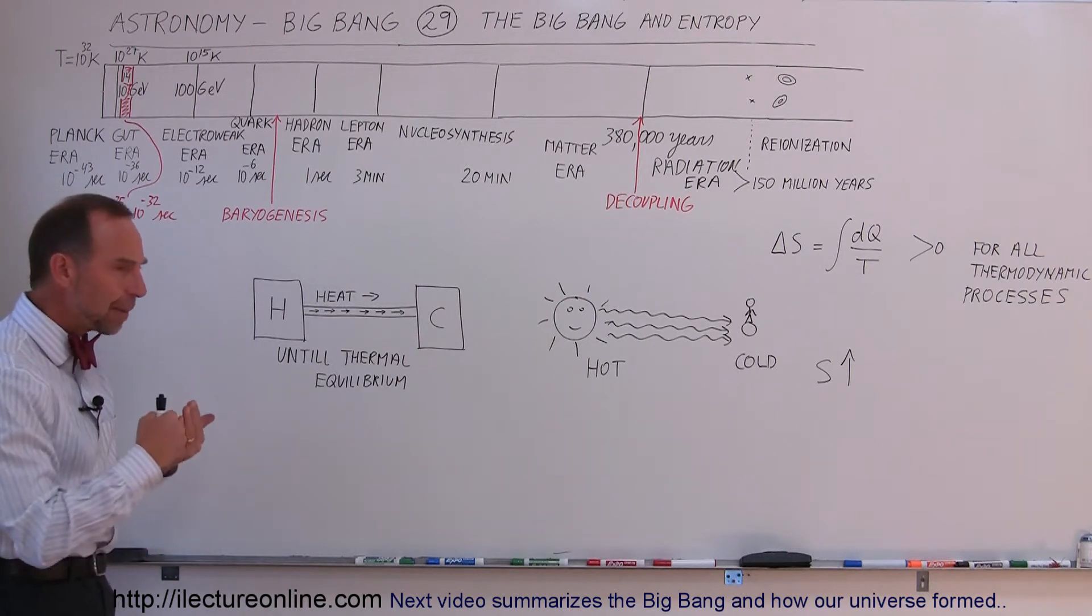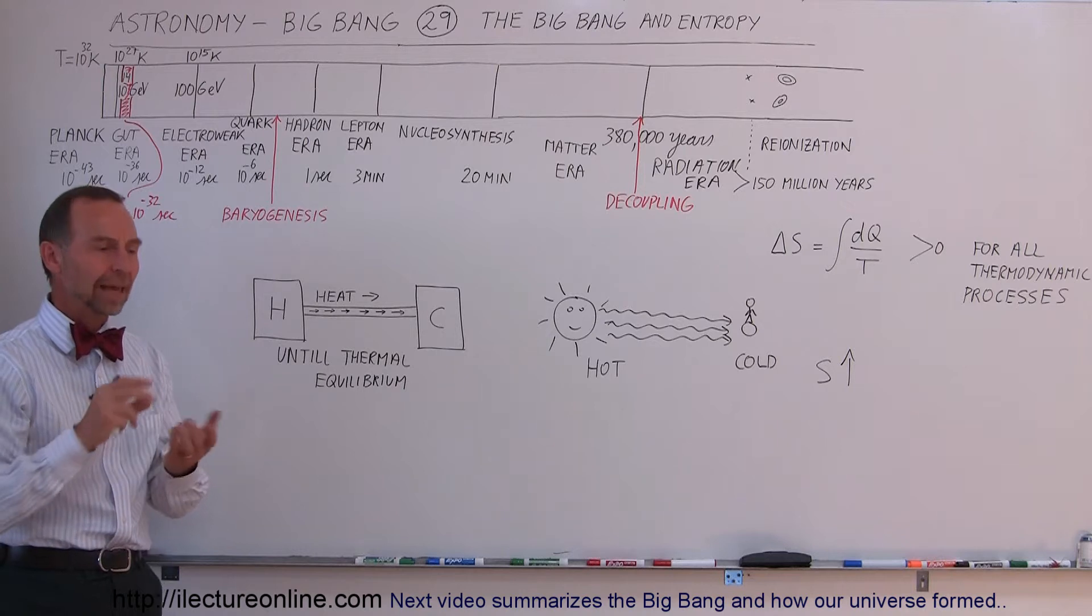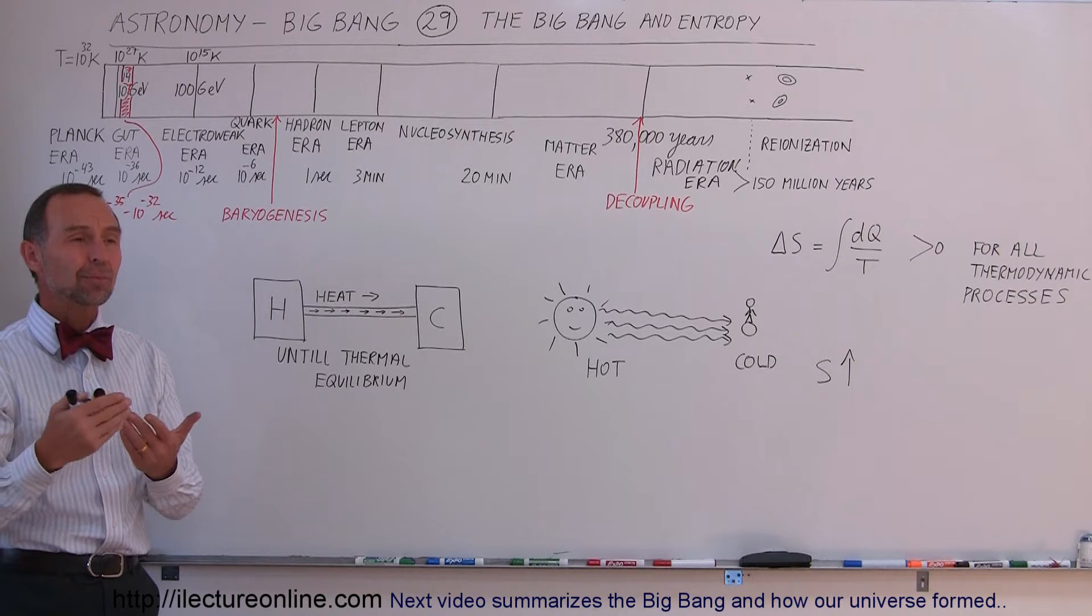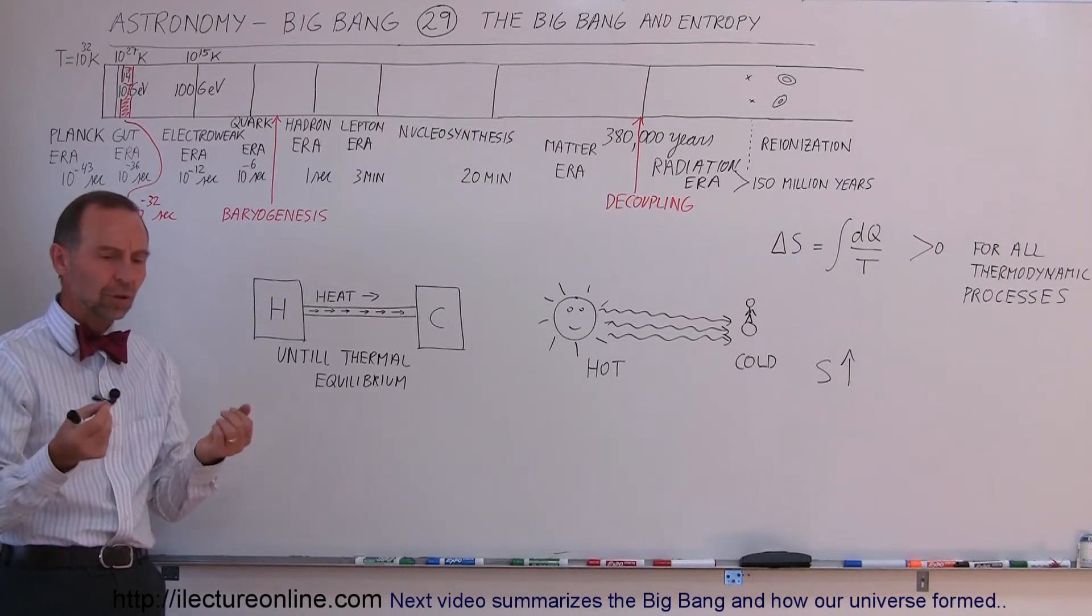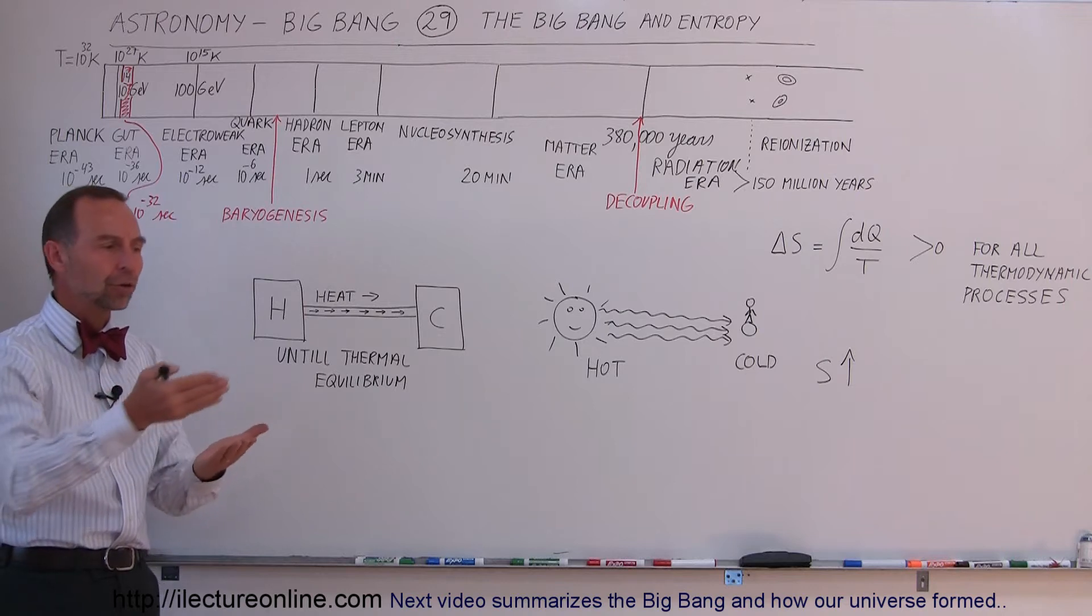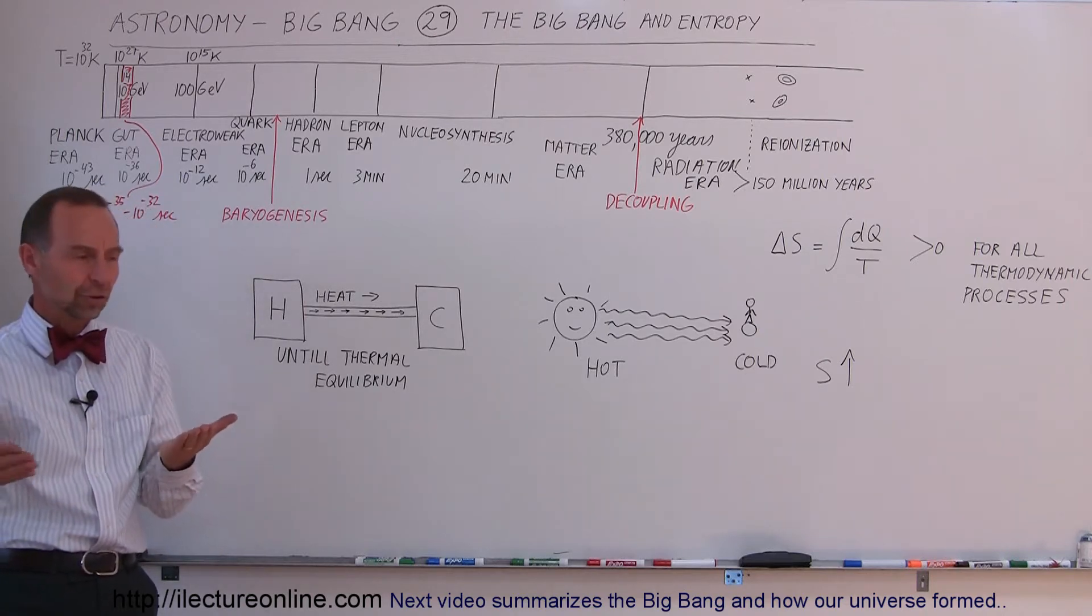We understand that when this happens, entropy increases. Entropy is kind of a measure of disorder. The greater the disorder, the greater entropy. And in thermodynamics, disorder can be determined in terms of is energy freely available? Are there hot places in the universe and are there cold places in the universe?